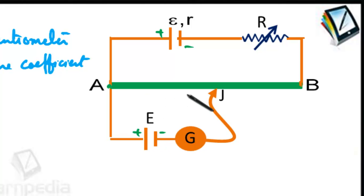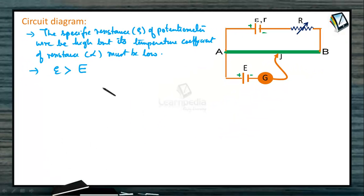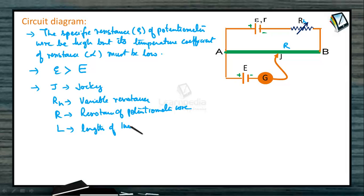The potential gradient must remain constant. For this, the current in the primary circuit must remain constant, and the jockey must not slide while contacting the wire. The diameter of the potentiometer wire must be uniform everywhere. The resistance of the wire is R and the total length is capital L.